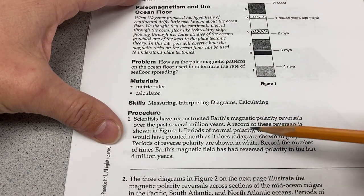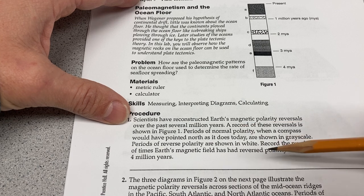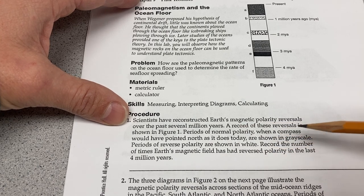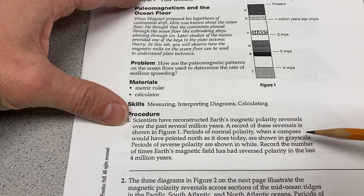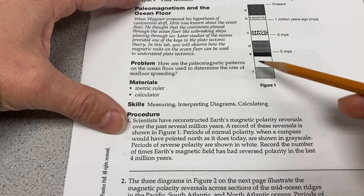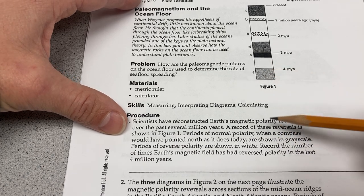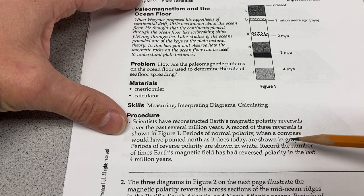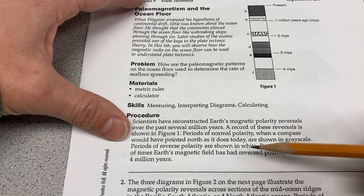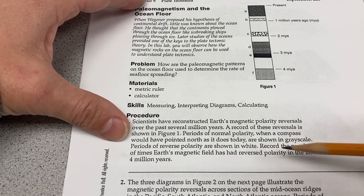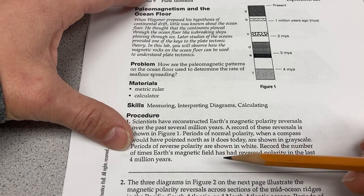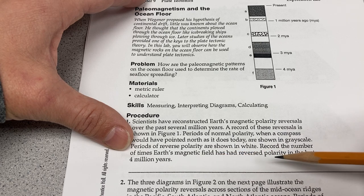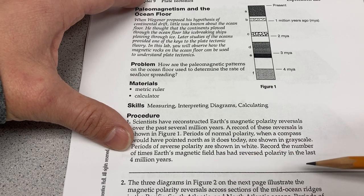Let's start with the procedure. Scientists have reconstructed Earth's magnetic polarity reversals over the past several million years. A record of these reversals is shown in figure number one. Periods of normal polarity, when a compass would have pointed north like it does today, are shown in grayscale. Periods of reverse polarity are shown in white. Record the number of times Earth's magnetic field has reversed polarity in the last four million years.